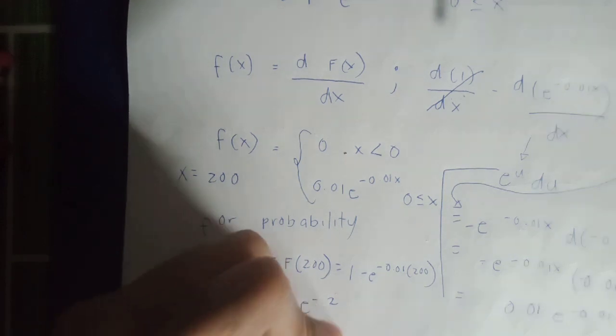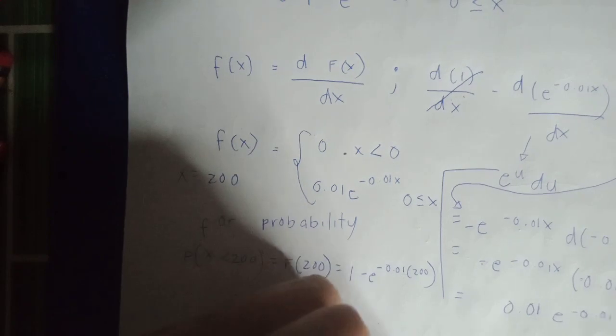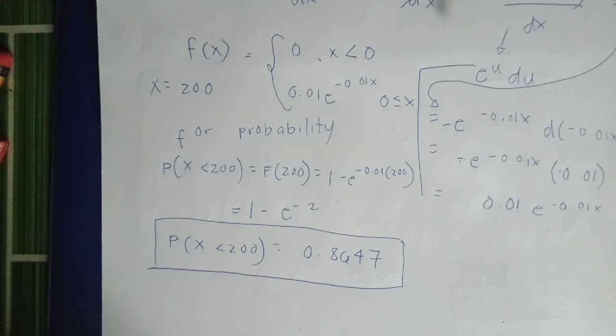Ito na yung probability na nakuha natin. Ganun lang kumuha ng probability for cumulative distribution function for continuous random variables.